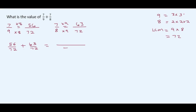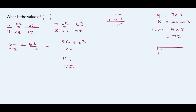So our new fractions are 56 over 72 plus 63 over 72. We keep our denominator the same and add 56 and 63: 6 plus 3 is 9, 5 plus 6 is 11 — so we have 119 over 72. Dividing: 72 multiplied by 1 is 72. 119 minus 72: 9 minus 2 is 7, 11 minus 7 is 4. So this is 1 and 47 over 72, and that's our answer.